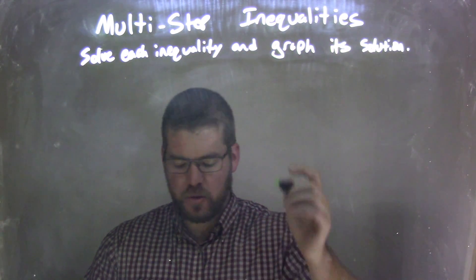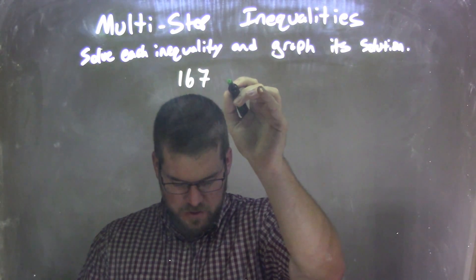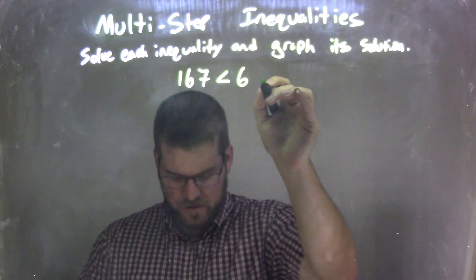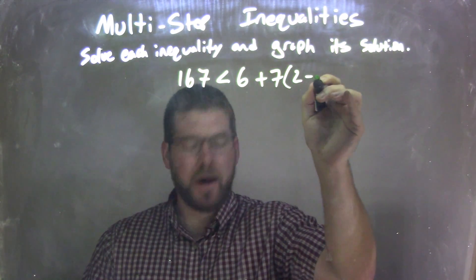We're going to solve each inequality and graph the solution. If I was given this inequality, 167 is less than 6 plus 7 times 2 minus 7r.